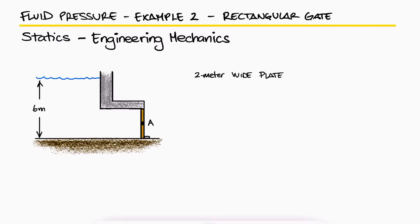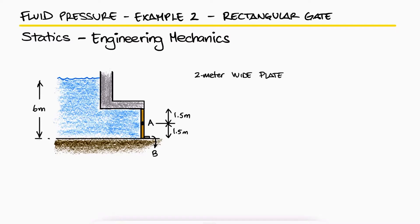A 2 meter wide rectangular gate is pinned at its center A and is prevented from rotating by the block at B. What are the reactions at supports A and B due to the hydrostatic pressure?